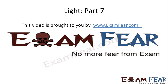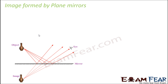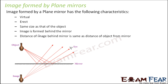This video on light part 7 is brought to you by examfear.com. Since we are currently discussing only about plane mirrors, let us quickly look at the image properties formed by a plane mirror. A plane mirror normally forms an image with the following characteristics: virtual and erect.